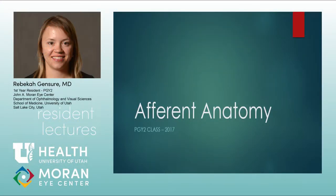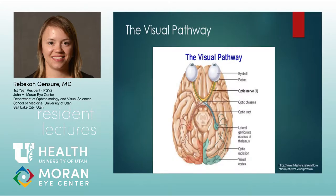The PGY2 class is presenting the afferent anatomy and some relevant clinical diseases — a brief overview touching on what's in the BCSC. The visual pathway overview includes everything involved in the afferent system: from the cornea through the eyeball to the retina, optic nerve, chiasm, tract, and into the visual cortex and occipital lobe. All of these pieces are susceptible to damage and can cause different disease states.